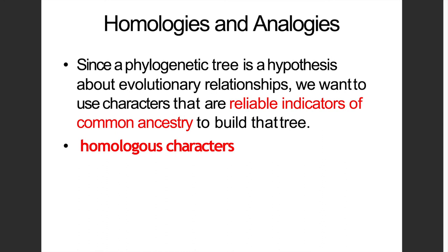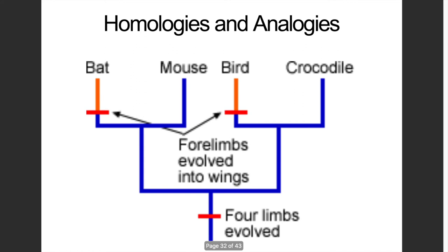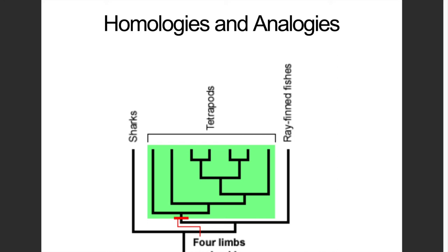When we say homologous characters, these are characters that are similar in appearance and also similar in ancestry or origin. For example, your bat wing and your bird wing — they have a common ancestor, that's why they have the same number of bones, same similarity in features and appearance, and also the same function. So they are homologous characters.